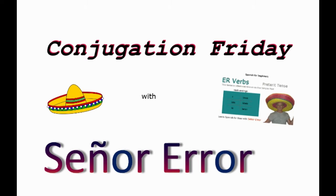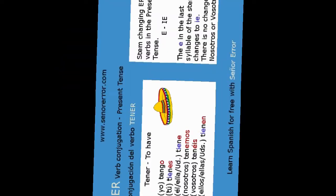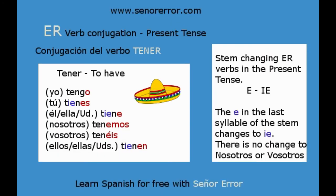Hello and welcome to Conjugation Friday with Senor Error. Today we are going to look at how to conjugate the ER verb TENER, 'to have,' in the present tense.